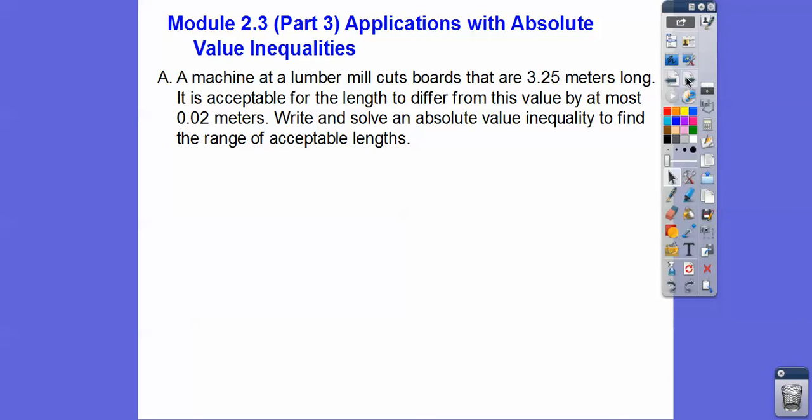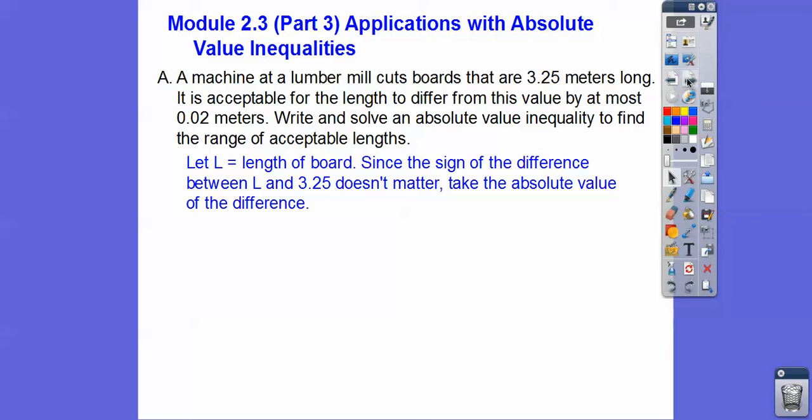I'm going to let L be our acceptable length. Since the sign of the difference between L and 3.25 doesn't matter, it's plus or minus this two hundredths of a meter. We take the absolute value of the difference. If you're in my class or any of our classes here at our school, they want you to set it up with an absolute value.